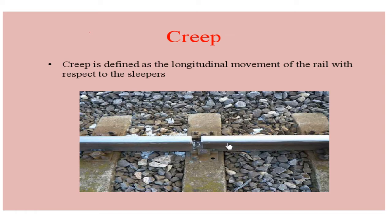What happens is there is a closing of successive expansion spaces at the rail joint. You can see here a rail joint — there is a gap in between the rails. If the gap gets decreased or the gap is getting closed, then it means that creep has occurred. In some cases, the opening of joints occurs, and there also we can say it is because of the longitudinal movement of rail.